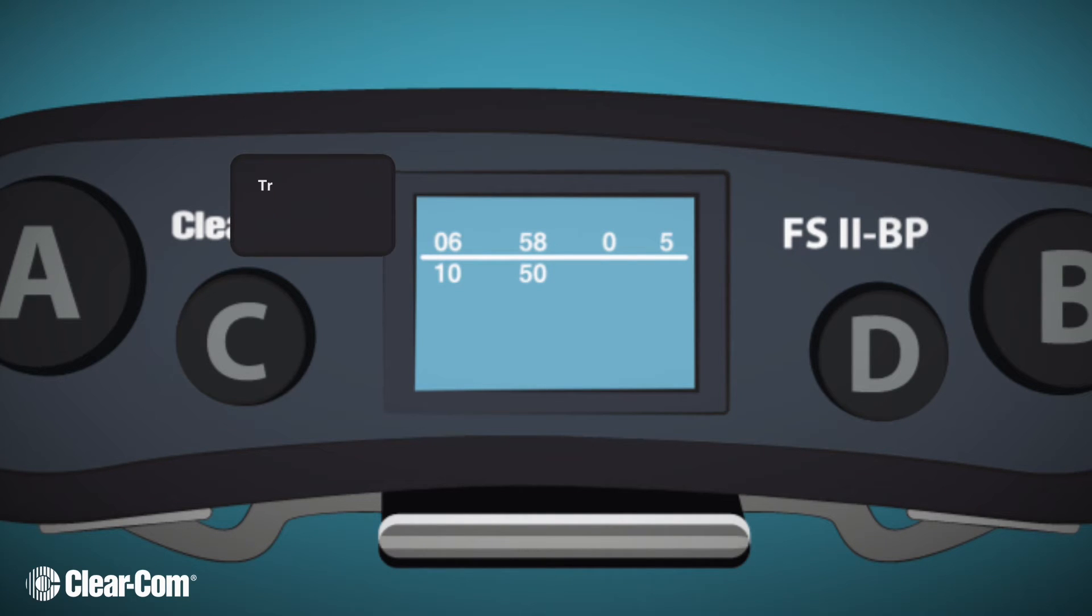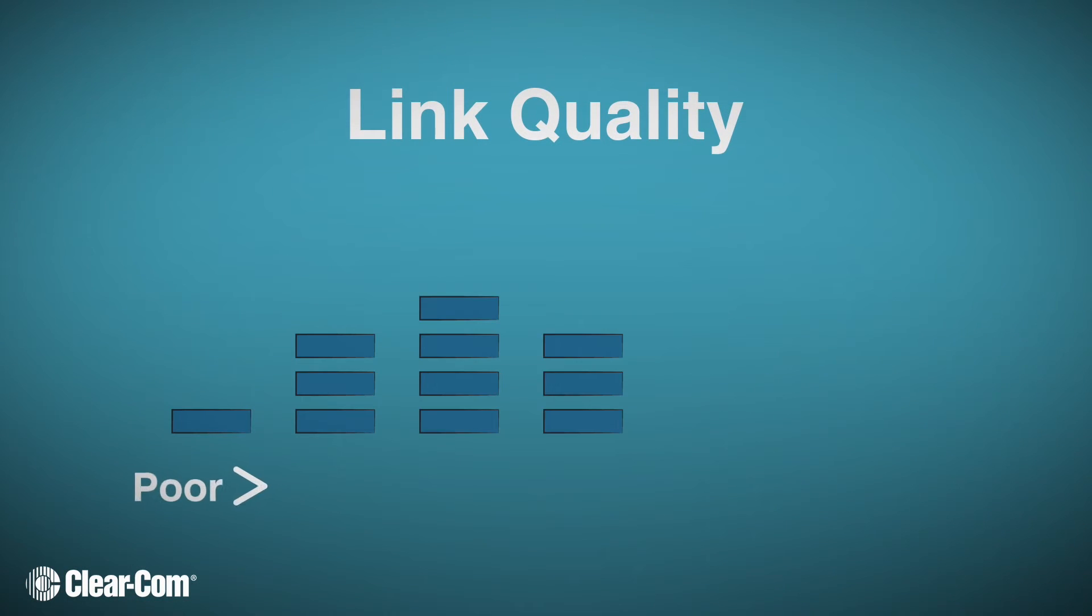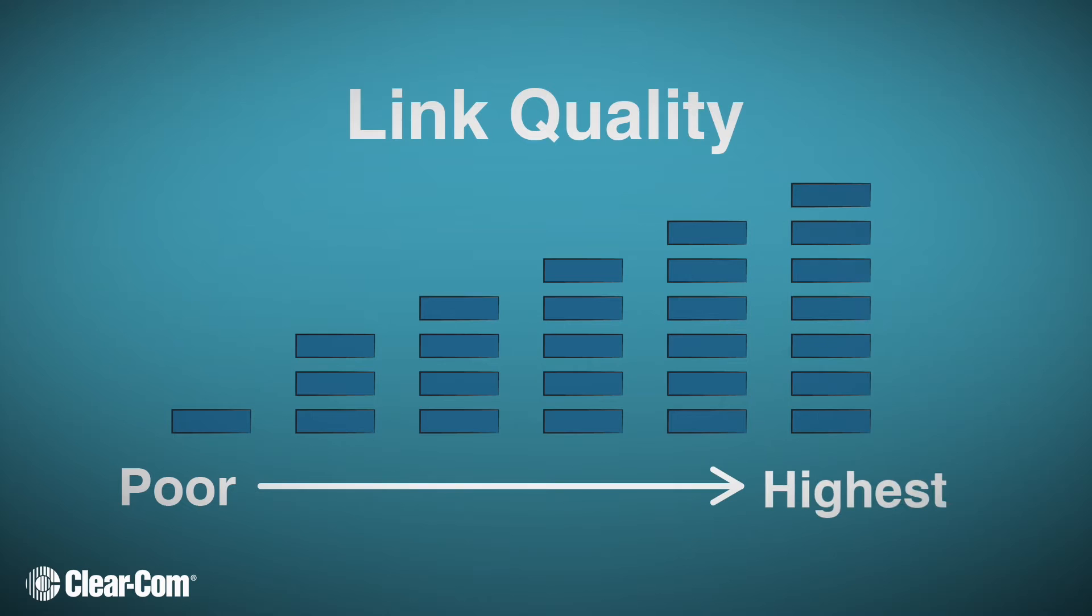The number in the first column shows the transceiver identification number. The second number represents the received signal strength indicator. The third set of numbers reveals the percentage of packet loss errors. And the last number is the link quality, which is a combined quality metric ranging from 1, being poor, to 5, which is the highest quality attainable.